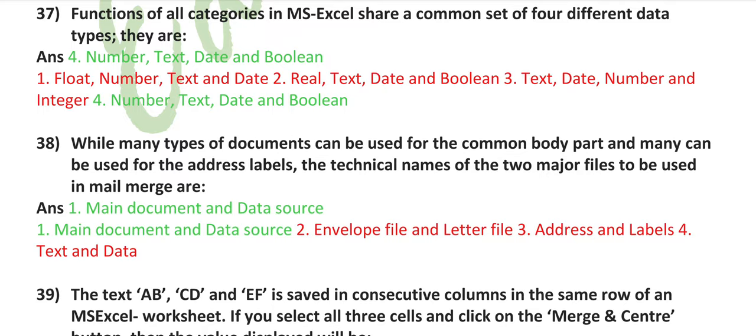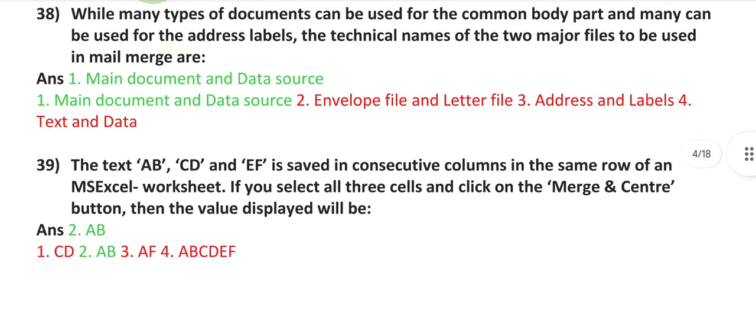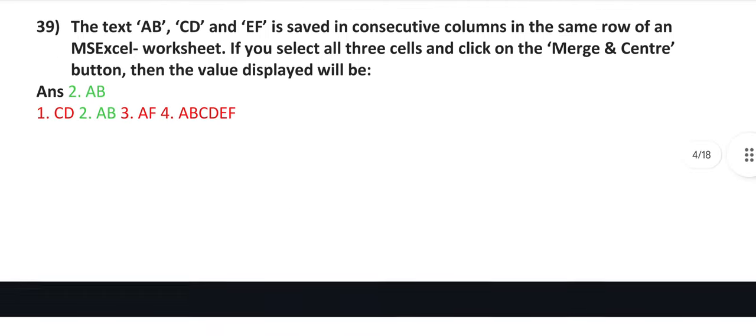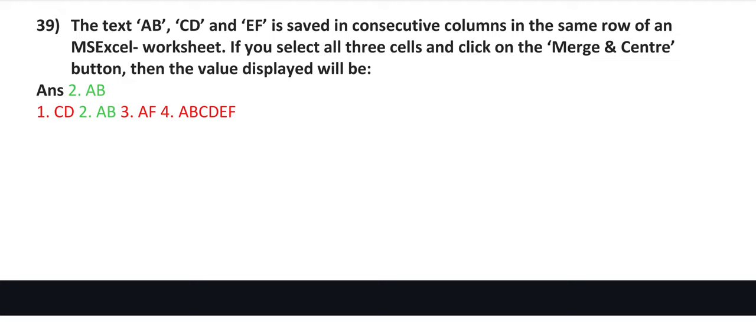While many types of documents can be used for the common body part and many can be used for the address labels, the technical names of the two major files to be used in mail merge are main document and data source. The text A, B, C, D, and E, F is saved in consecutive columns in the same row of an MS Excel worksheet. If you select all three cells and click on the merge and center button, then the value displayed will be A, B.